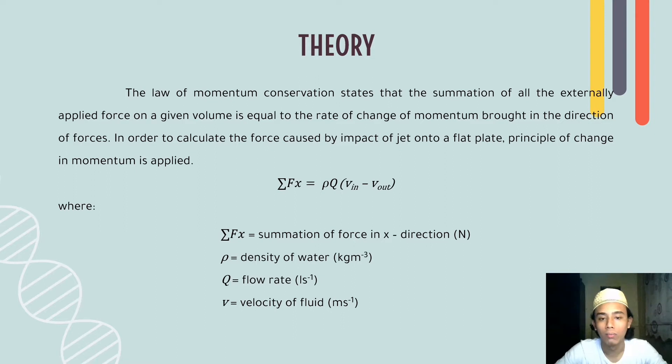The equation is summation of Fs equals ρQ(V_in minus V_out), where summation of Fs equals summation of force in x direction. It can also be in y and z direction. ρ is density of water in kilogram per meter cubed. Q is volumetric flow rate in liter per second and V is velocity of fluid in meter per second.